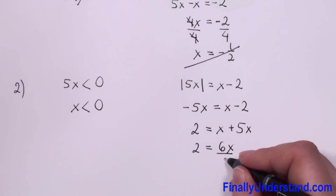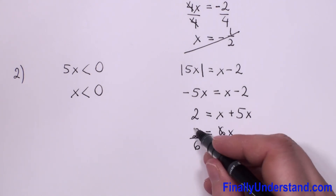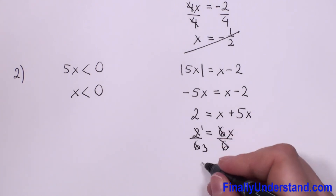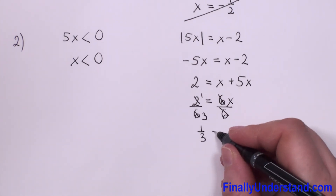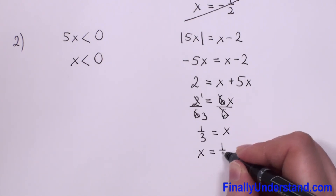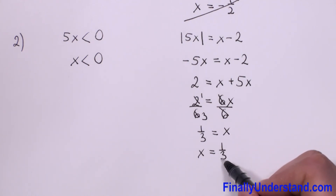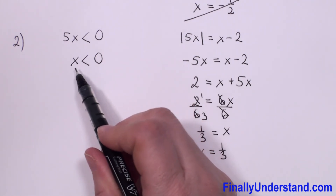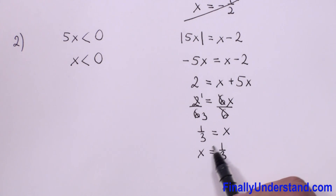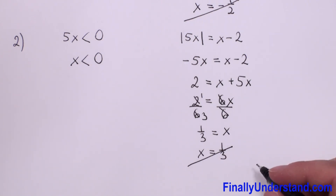Now I will divide both sides by 6. 2 over 6 simplifies, so we have one third equals x. Changing sides, we have x equals one third. Now we have to check if this solution is included in our domain. x should be less than 0, but this number is positive. It means it is not correct. We have to cross this out. So we can say this equation has no solution.